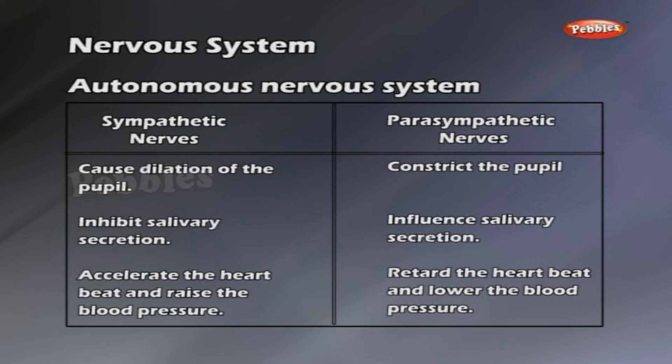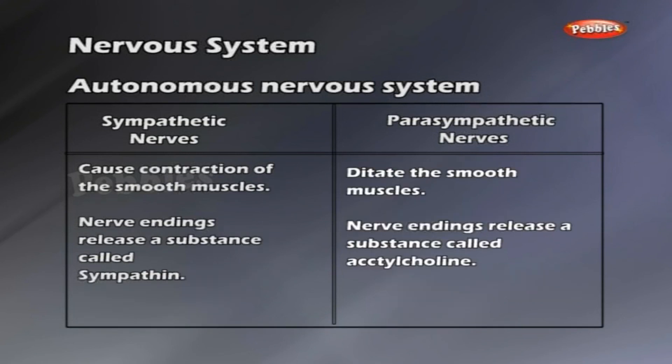Parasympathetic nerves arise from the brain and spinal cord. Parasympathetic nerves cause contraction of the smooth muscles. Nerve endings release a substance called acetylcholine.